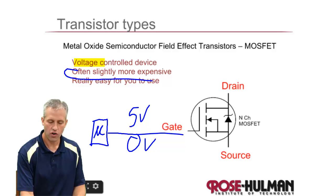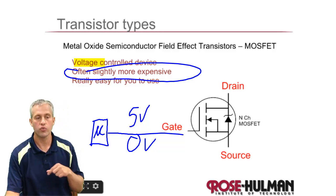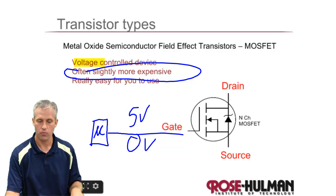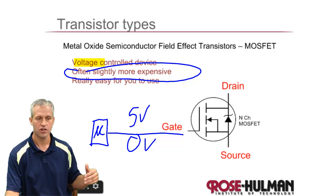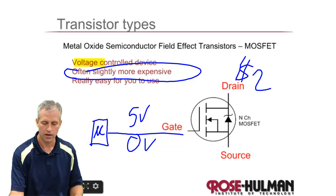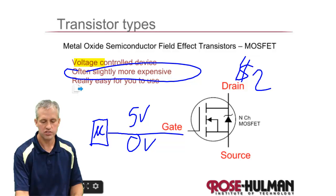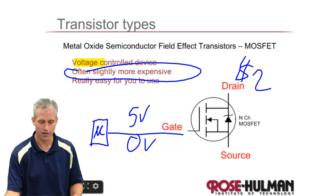They often are slightly more expensive. The ones we'll use are quite a bit more expensive because our MOSFETs are good to about 2 amps, whereas our NPNs are good to about 200 milliamps. So our particular MOSFETs will be more like $2, but they are just so easy to use that sometimes it's well worth that $2.